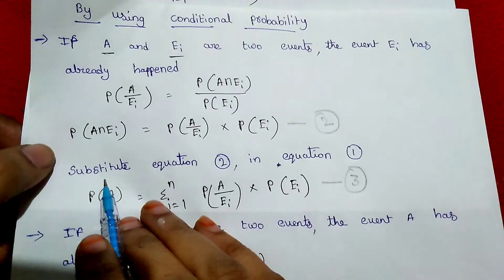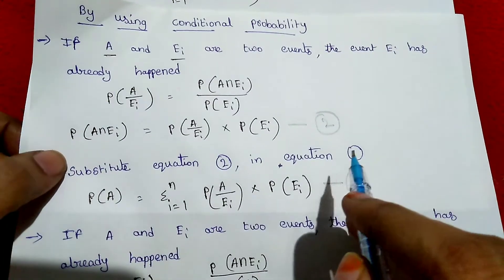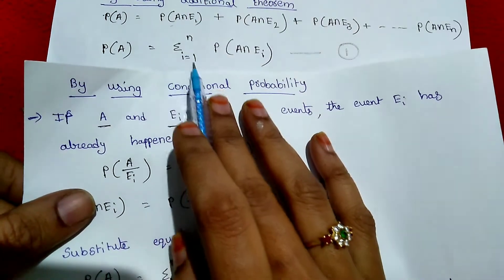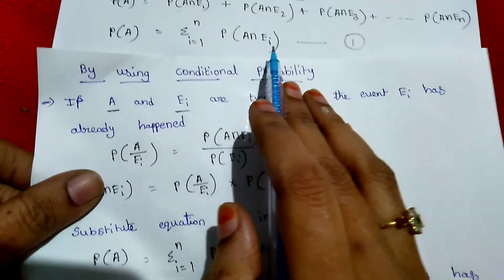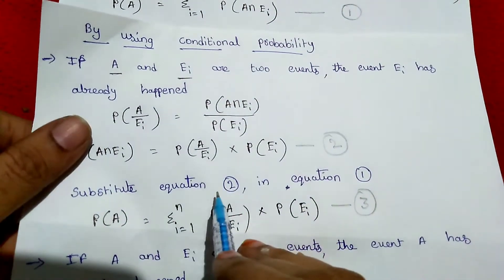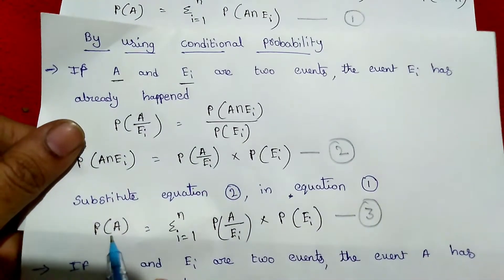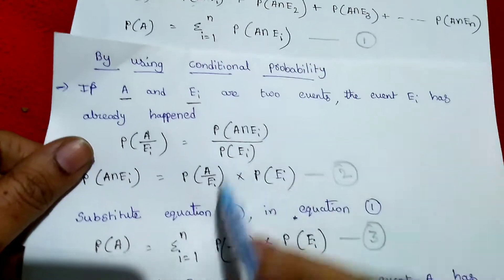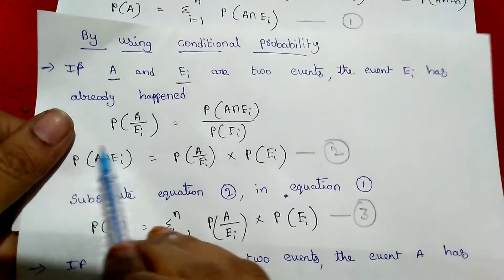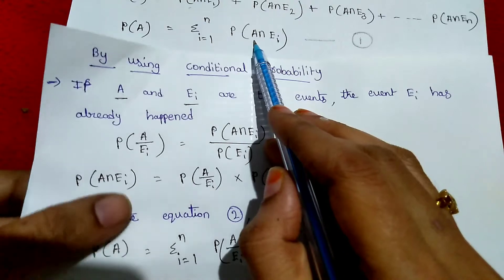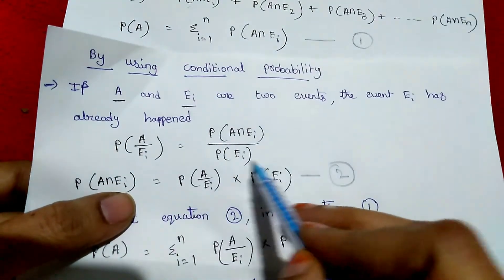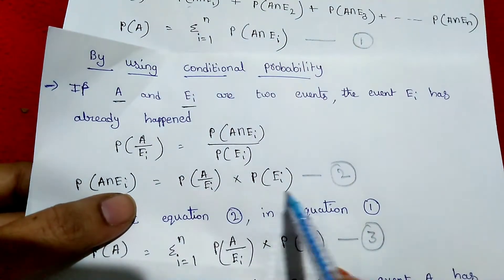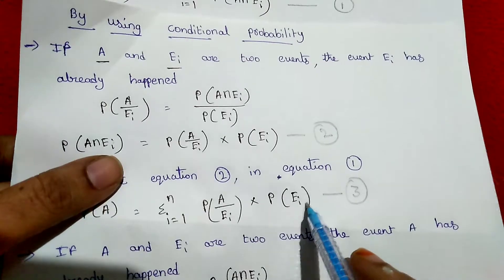The second equation is established. Substitute equation 2 into equation 1. We have probability of A equal to summation from n i equal to 1 of probability of A intersection EI. Substituting equation 2, probability of A equals summation from n i equal to 1 of probability of A given EI times probability of EI. This is the third equation.